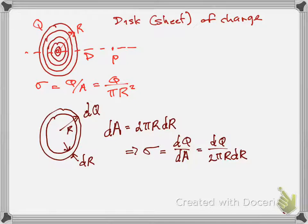Before we get there, let's see how to break this disk up into rings - still reviewing from last class. We're going to say that the disk, or the two-dimensional sheet of charge, has a charge per unit area of q over A. That's the first equation: sigma equals q over A, and the area of that disk is pi R squared. We'll break that disk into rings, where each ring has a radius r, a thickness dr, and a charge dq, such that when we add up all the dqs they equal the total charge q of the disk.